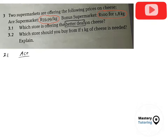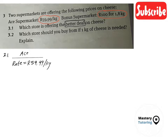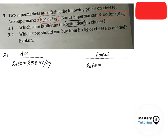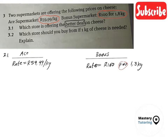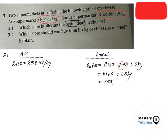For Ace supermarket, the rate is R59.99 per kg. For Bonus supermarket, the price is R100 for 1.8 kg. We can treat this as a division: 100 divided by 1.8. So we calculate 100 divided by 1.8.